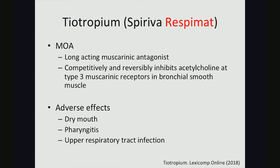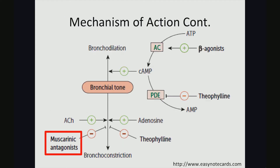Some common adverse effects seen with tiotropium include dry mouth, reported in about 16% of cases, pharyngitis also reported in 16% of cases, and upper respiratory tract infection occurring in about 43% of patients. A visual of the mechanism of action shows that muscarinic antagonists work at the M3 receptor and prevent acetylcholine's action, which would normally lead to bronchoconstriction and worsen asthma. By blocking this receptor, you get smooth muscle relaxation and ultimately bronchodilation.